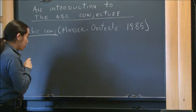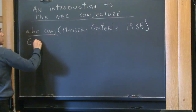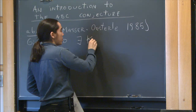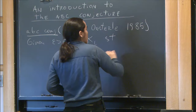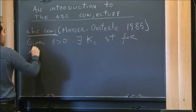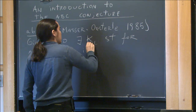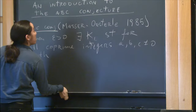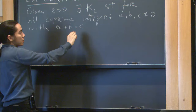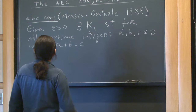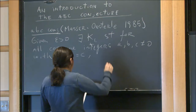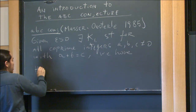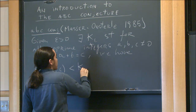The conjecture can be stated as follows: given epsilon positive, there is some number k_epsilon depending only on this choice of epsilon, such that for all co-prime integers a, b, and c different from zero with a plus b equal to c, we have that the height of the triple (a, b, c) is less than k_epsilon times the radical of a times b times c to the power of one plus epsilon.